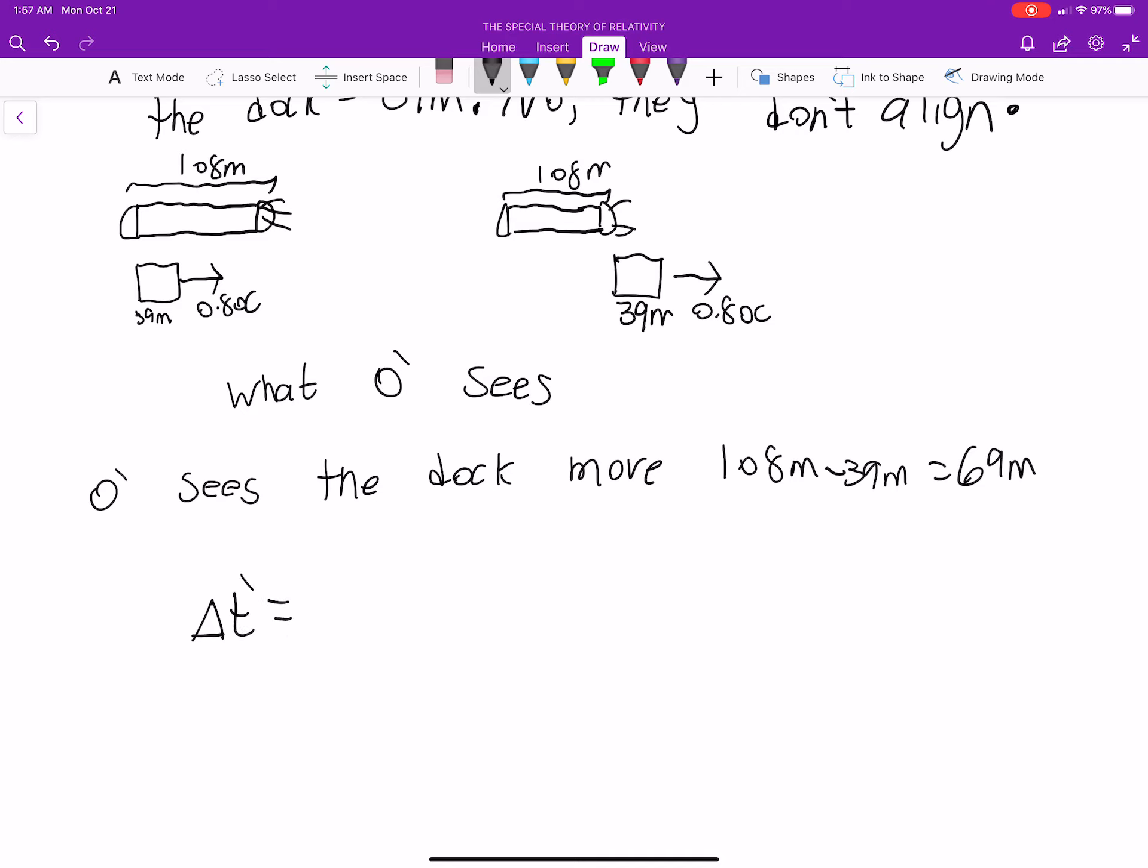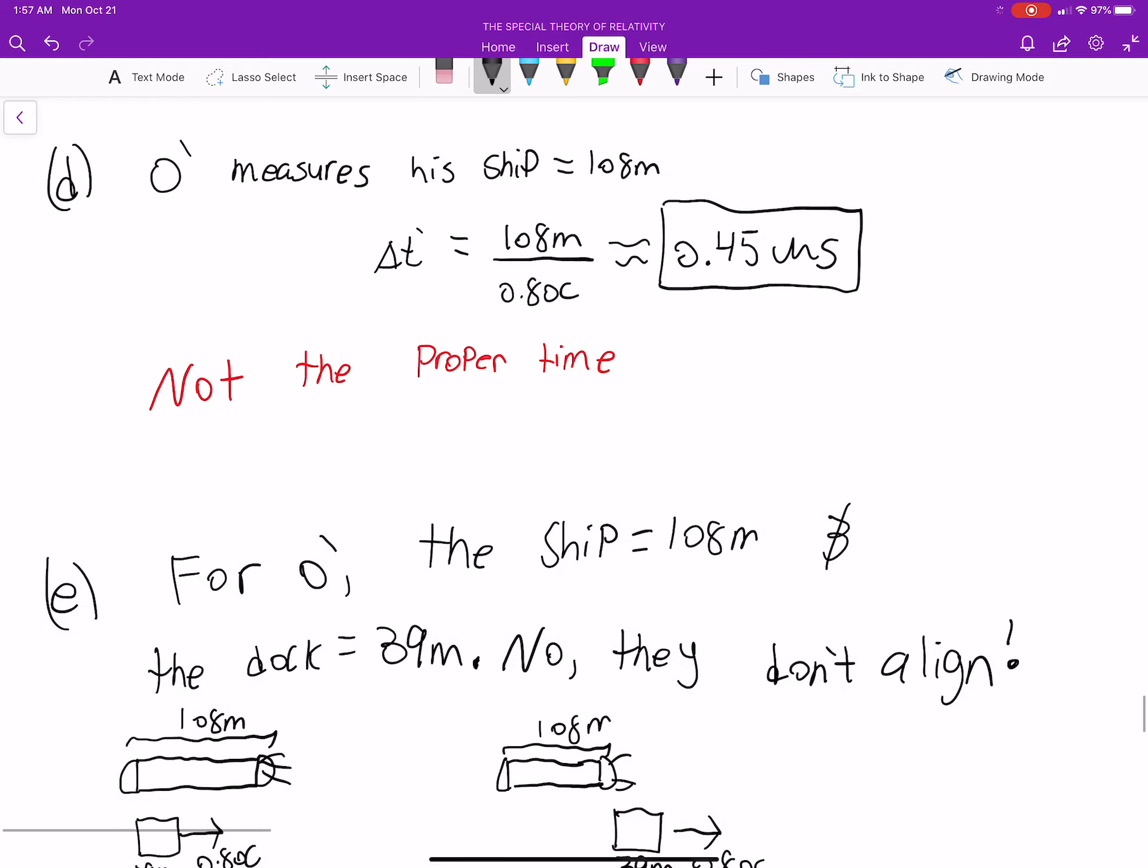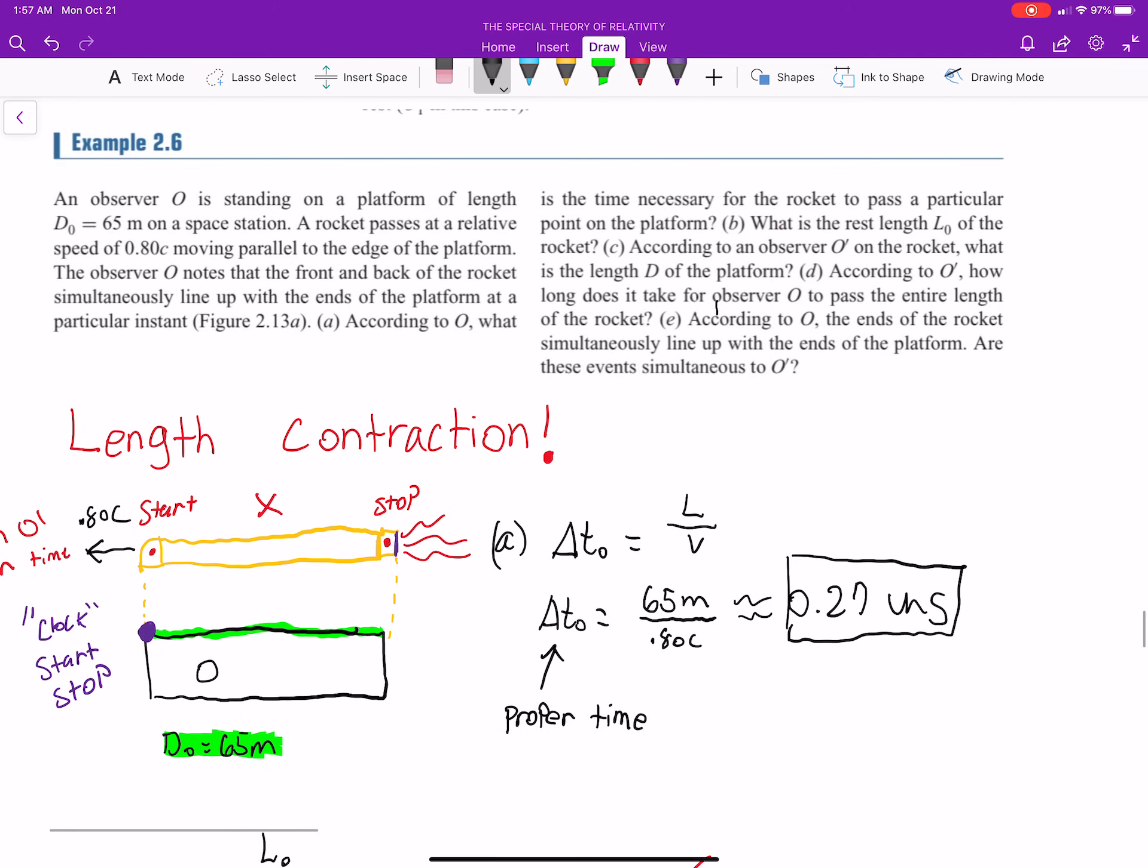So, delta T prime is going to be the 69 meters divided by the speed. And if you put that in you get 0.29 microseconds. So, from its perspective that's how long it takes. So, they don't necessarily see that it both lines up is I think the point of this question. So, do they line up? No, they don't. So, that kind of just shows it's really relative to the perspective.